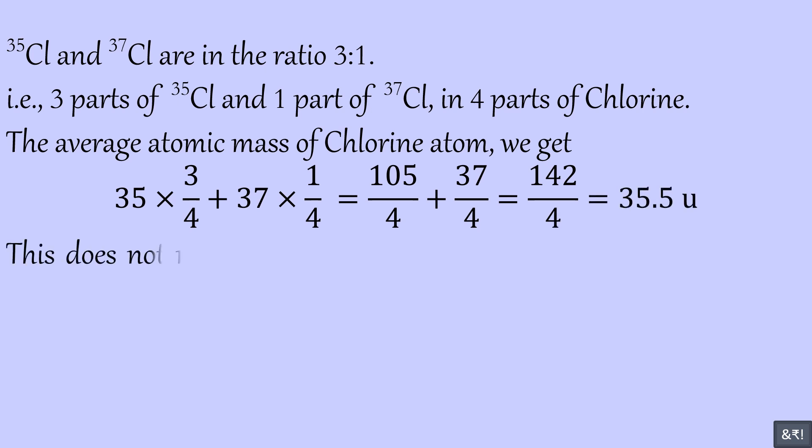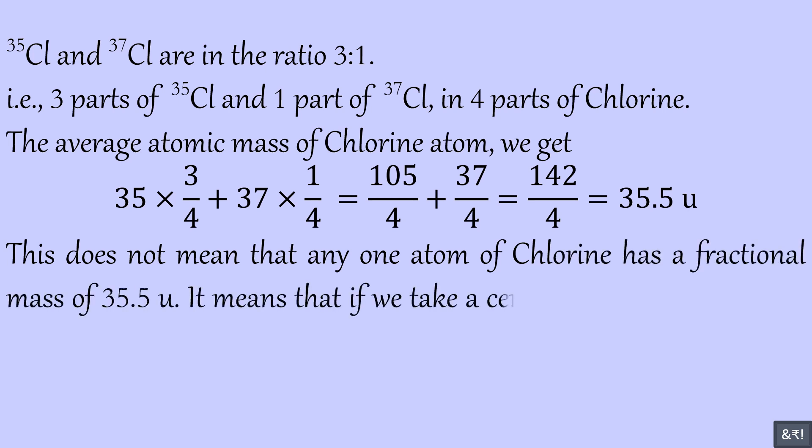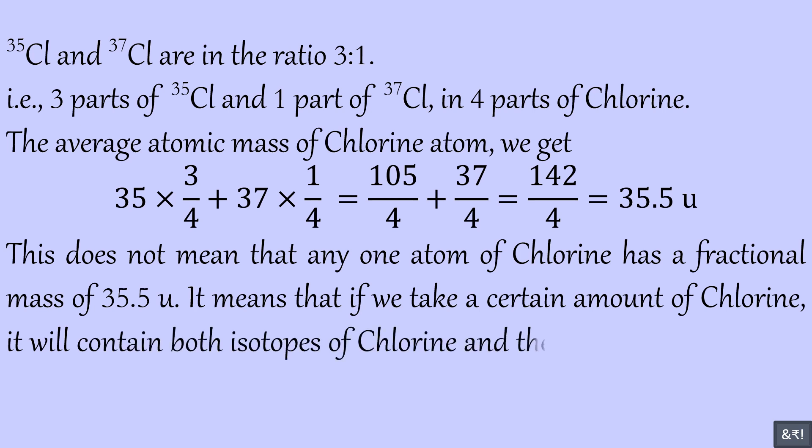This does not mean that any one atom of chlorine has a fractional mass of 35.5U. It means that if we take a certain amount of chlorine, it will contain both isotopes of chlorine and the average mass of atom is 35.5U.